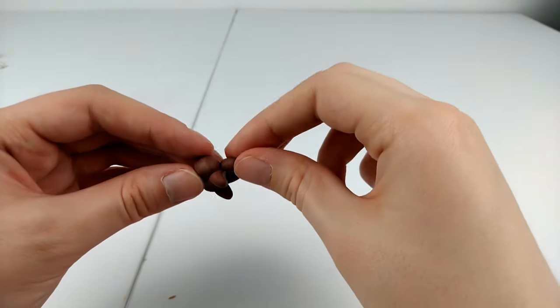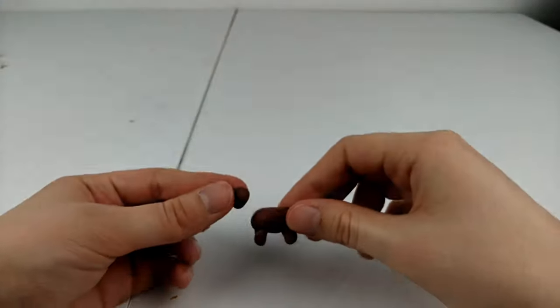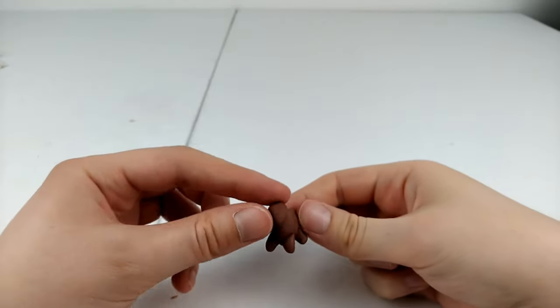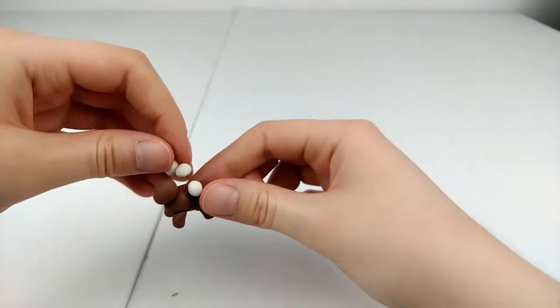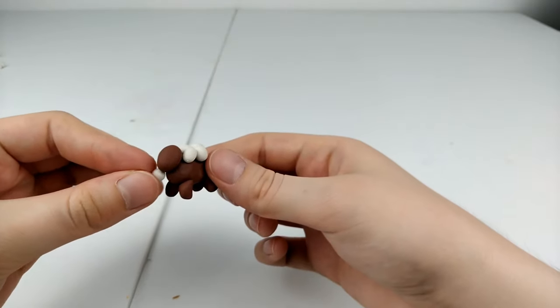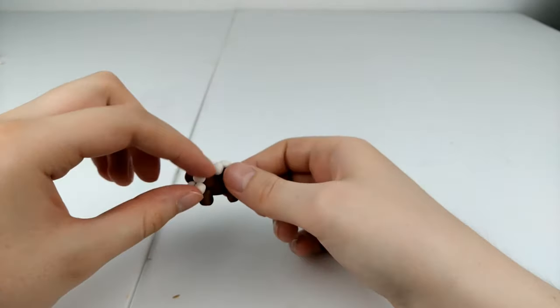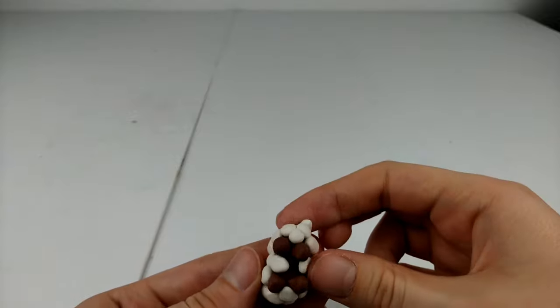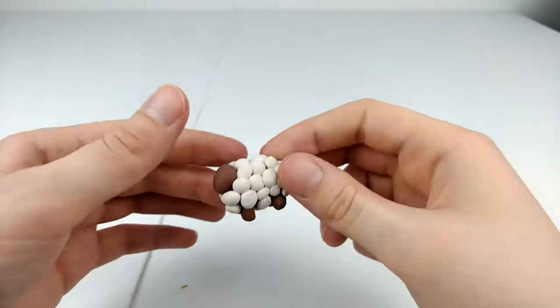And for the head we're just going to take another ball of clay and slightly roll it between our fingers to give it an elongated face. And now comes the fun part. We're going to take a bunch of little white balls of clay and we're just going to stick them all over the sheep. And you're probably going to need a lot more than you originally thought.